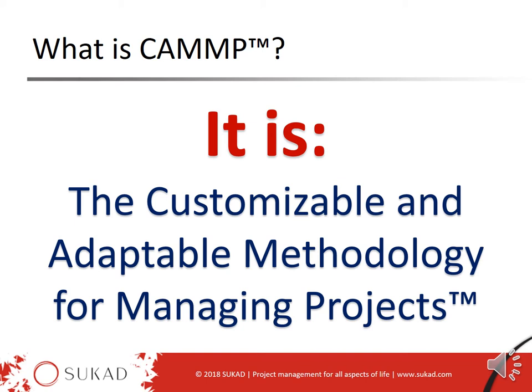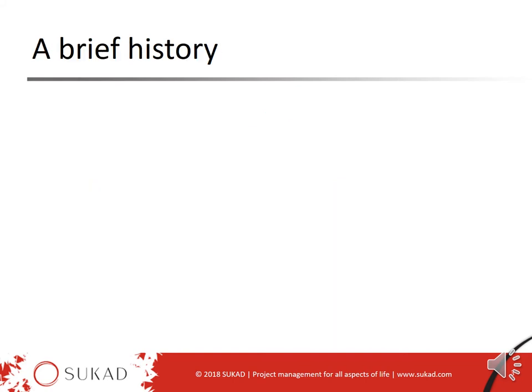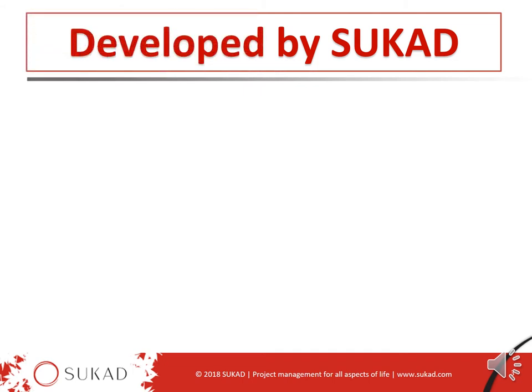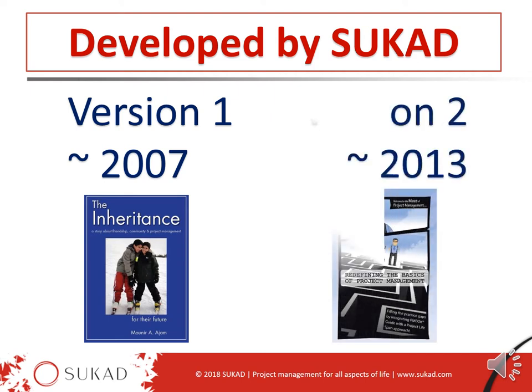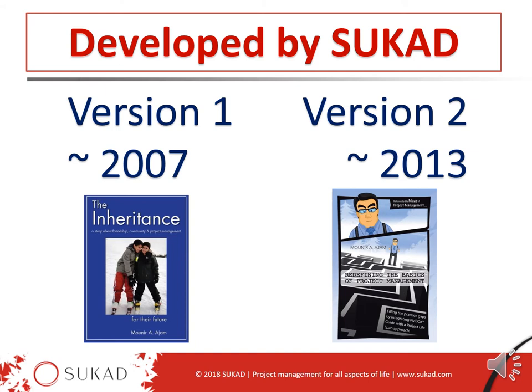This could be more than one method within the same organization, especially a large conglomerate doing multiple types of projects — they could be using multiple methods all driven from CAMP. Brief history: CAMP was developed by SUKAD in 2007. Version 1 resulted in a book published in 2010, though the main concepts were developed in 2007. Then Version 2 was developed around 2011–2013, leading to other books. These are the primary references on CAMP up to a few months ago.